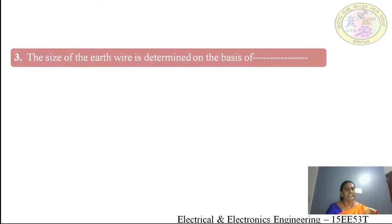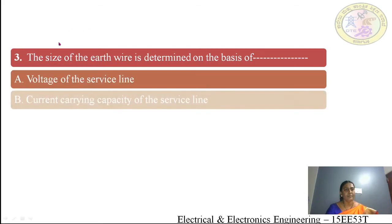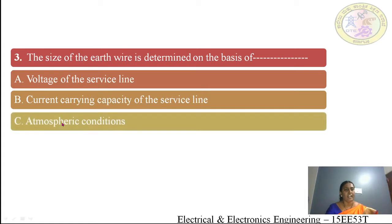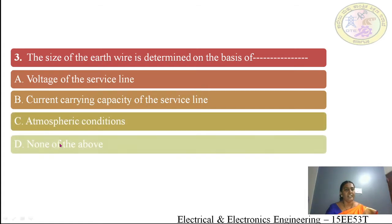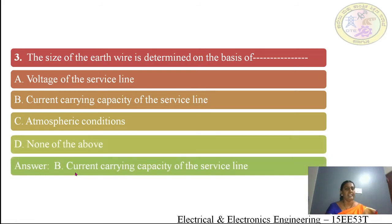Third question: the size of the earth wire is determined on the basis of — (A) voltage on the service line, (B) current carrying capacity of the service line and atmospheric conditions, (C) none of the above. The answer is option B: current carrying capacity of the service line.